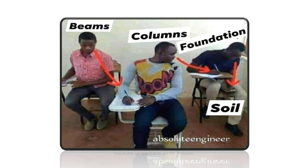This can be well understood from this figure. You can see here, in a very illustrative way, the beams are looking towards the columns — meaning the beams transmit the loads to the columns. The external load is first transferred to the roof, then from the roof to the beams, then from the beams to the columns. The columns are looking towards the foundations, meaning columns transmit loads to the foundations, and finally foundations transmit the load to the soil.